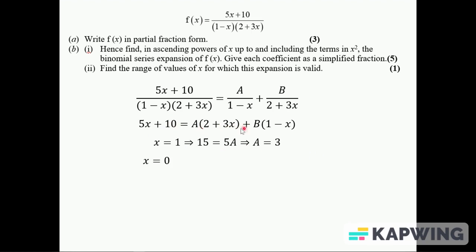So I'll just have 10 on the left-hand side, I'll have 2A plus B over here. I know that A is equal to 3, so using that, B is equal to 4. So partial fractions look like this.